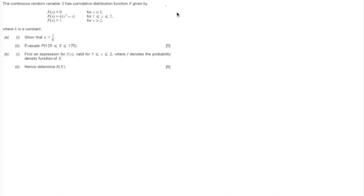The continuous random variable x has a cumulative distribution function f given by f of x equal to 0 for x less than 1, f of x defined by the function k times x cubed minus x for x between 1 and 2, and f of x equal to 1 for x greater than 2, where k is a constant.